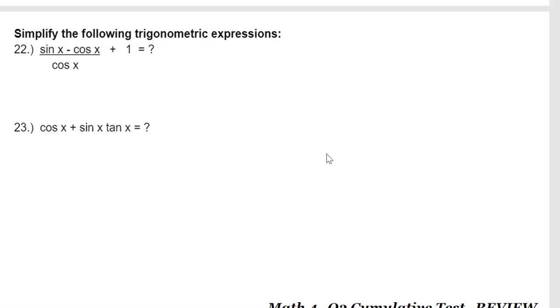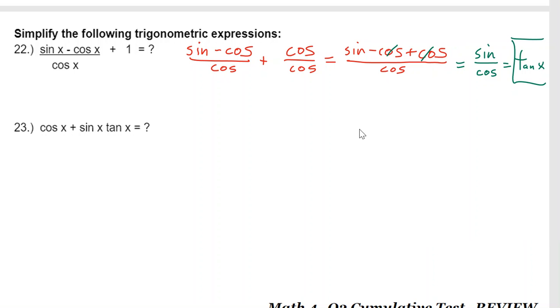All right coming down the home stretch. Now let's rewrite some of these and see if we can simplify them. The only way that I can add one to this is to make the denominators the same so I'm going to say all right there's sine minus cosine over cosine plus cosine over cosine that's one. Well if they have the same denominator now I can say sine minus cosine plus cosine over cosine and these two guys are going to cancel out which is going to leave me with sine over cosine which can be simplified to tangent of x.